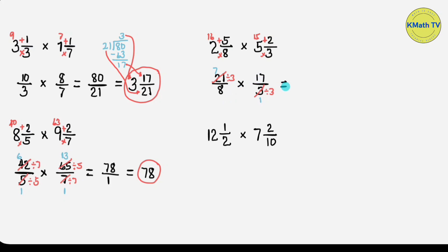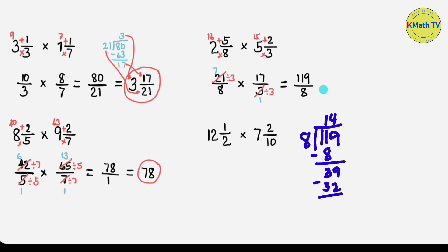17 and 8 do not have a GCF, so we can't cancel them. Let's multiply: multiply the numerators — 7 times 17 equals 119. Multiply also the denominators: 8 times 1 equals 8. The answer is 119/8. We can simplify this improper fraction by dividing the numerator by the denominator. 119 divided by 8 gives a quotient of 14 and a remainder of 7. Since there is a remainder, the answer is the mixed number 14 and 7/8.